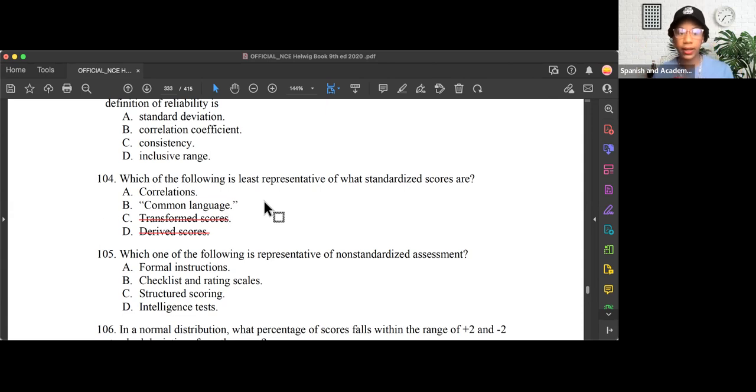To make up for this, we take our raw scores and we standardize them into standard scores. We know that standardized scores are transformed scores because they're transformed from their raw score state. We also know that standardized scores are common language. If you're stuck between the two, so you're able to knock out C and D, you would then need to remember, correlations is a term in and of itself. Correlations means relationships, not between partners, but between variables.